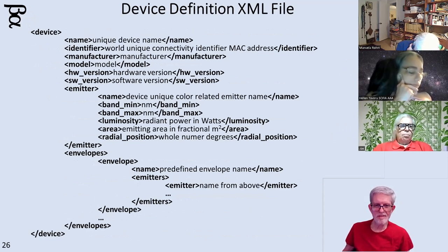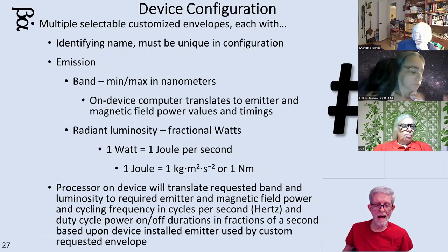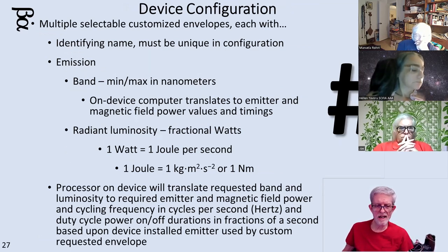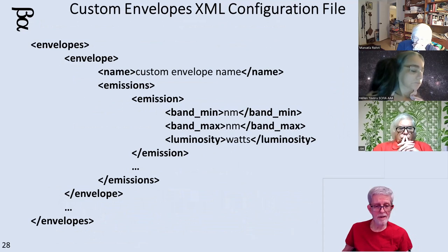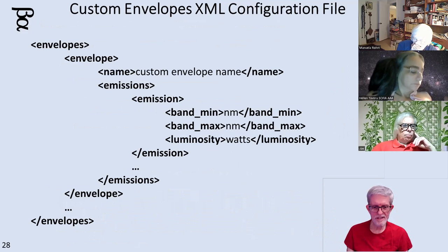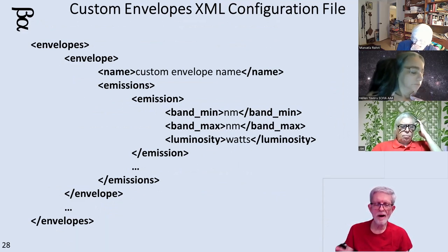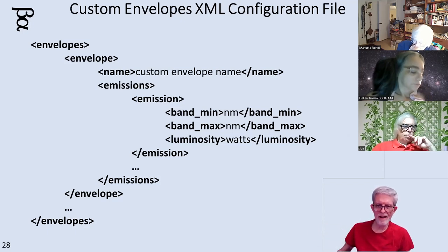I need an XML file that defines all the basic specifications of the parts — names of things and values. Then I need to be able to say: now that I've got my basic specification done and I'm defining my envelopes, how do I want to define my emissions so I can easily select those without a lot of reprogramming? Another XML — I'm going to define an envelope. An envelope is: I want to generate this color, particular band of colors in nanometers, and the flux. How bright do I want it? That would be: call up this particular envelope and spit out that color for that amount of time.